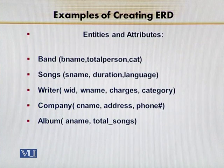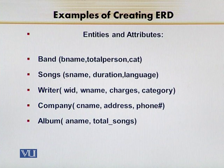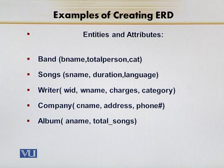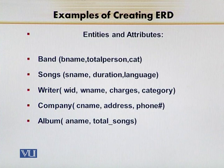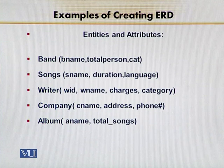Now Step Number 1: we identify the entities. Our entities are: Band, Songs, Writer, Company, and Album. For Band's attributes — I have intentionally not written a primary key immediately, as we will do that in the physical data model. Band attributes are: B_Name (band name), Total_Person, and Category — for example, Sufi singers, Rock stars, and so on. Songs have attributes: Song_Name, Direction, and Language.